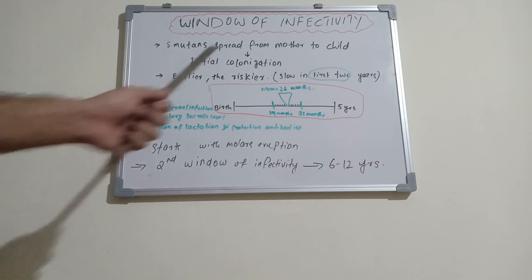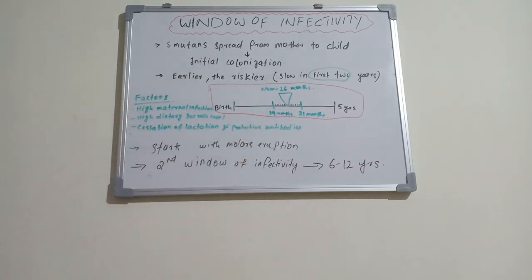Colonization will anyway happen, so we should always take care of baby's teeth during this period, so we can avoid a lot of dental caries. This is a short note that's been asked from university exams many times: What is window of infectivity? It's nothing but initial colonization of Streptococcus mutans bacteria. These are the factors.